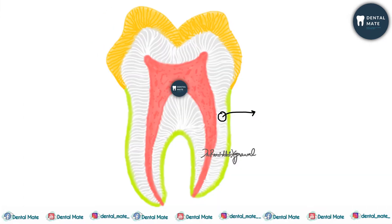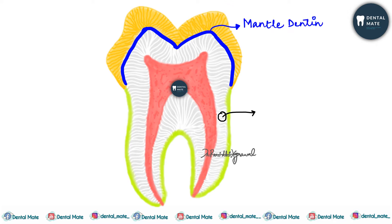Now, if we talk about the types of dentine — first up is mantle dentine. It is the first formed dentine in the crown, underlying the DEJ. It is the outermost, most peripheral layer of dentine.